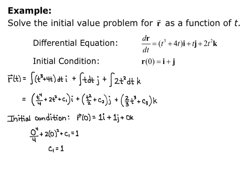Now we do the same for the j component. We plug in 0 for t: 0 squared over 2 plus c sub 2 equals 1, so c sub 2 equals 1. For the k component: 2/3 times 0 cubed plus c3 equals 0, so c sub 3 equals 0.